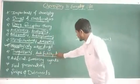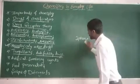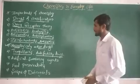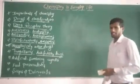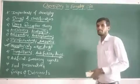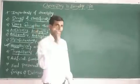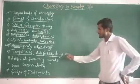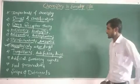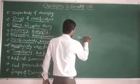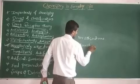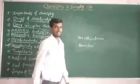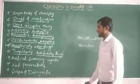Another type of drug is anti-fertility drugs. These are chemical substances which are used to control pregnancy. Some examples for anti-fertility drugs are norethindrone and norgestrel. These are the main examples for anti-fertility drugs.